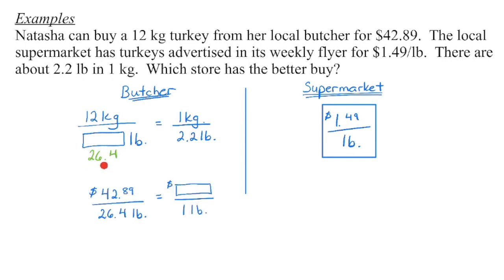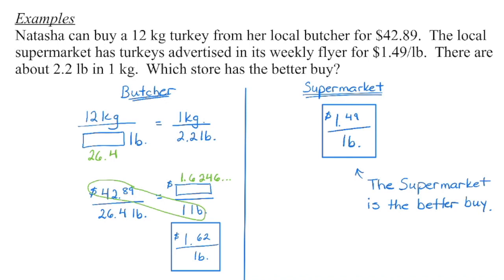Remember to keep this exact answer in your calculator until the very end. So once we've figured out how many pounds we have, that means at the butcher, we're going to be paying $42.89 for 26.4 pounds of meat. So now I want to figure out what the price per pound is so I can compare it to the supermarket. Once we have a unit rate in the same unit, now we can make a comparison. And we can see that this is going to cost less than this.